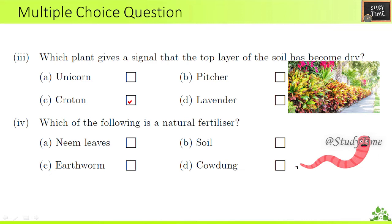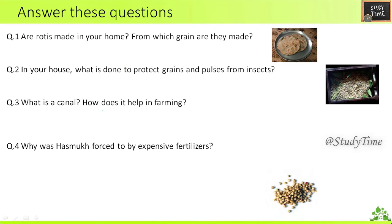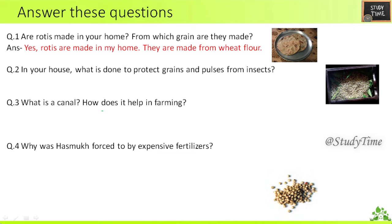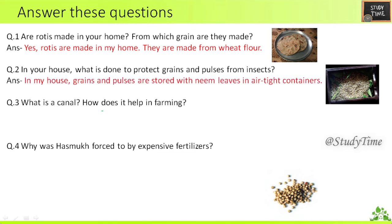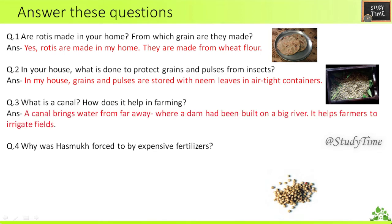Answer these questions: First — are rotis made in your home and from which grain? Yes, rotis are made in my home; they are made from wheat flour. Second — in your house, what is done to protect grains and pulses from insects? In my house, grains and pulses are stored with neem leaves in airtight containers. Third — what is a canal and how does it help in farming? A canal brings water from far away where a dam has been built on a river; it helps farmers to irrigate fields.